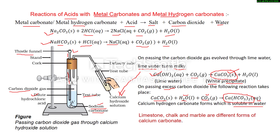To recap: when acid reacts with metal carbonate and metal hydrogen carbonate, carbon dioxide gas is evolved. To identify that the gas is carbon dioxide — when carbon dioxide is passed into lime water (calcium hydroxide), lime water turns milky due to the formation of insoluble calcium carbonate. But when we pass excess carbon dioxide, this milkiness disappears.